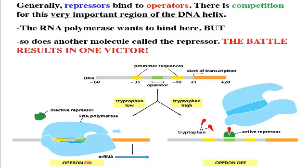In its most distilled version, a repressor will reduce the production of messenger RNA. A repressor is anything that reduces the amount of messenger RNA by reducing or eliminating transcription. In this case, the dark green molecule is a very effective repressor because it completely eliminates any transcription that could have taken place at this location.